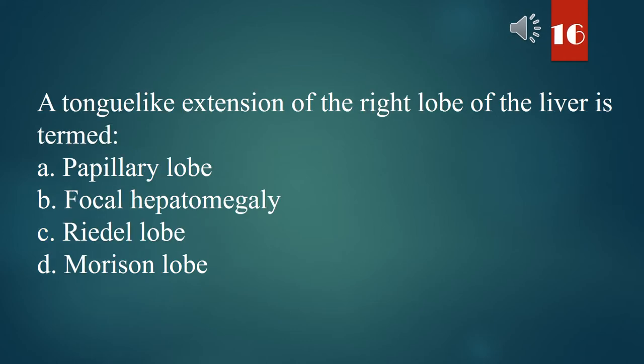A tongue-like extension of the right lobe of the liver is termed: A. Papillary lobe. B. Focal hepatomegaly. C. Riedel's lobe. D. Morrison lobe. The answer is C. Riedel's lobe.